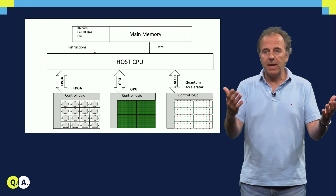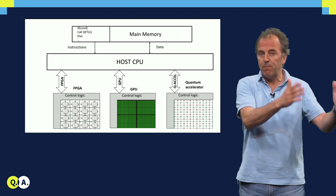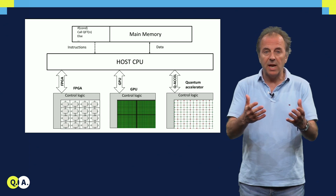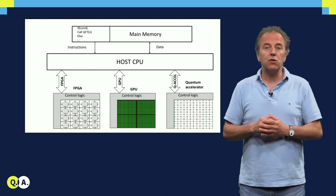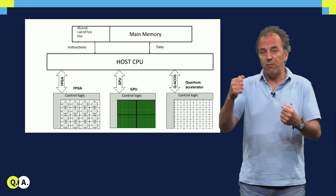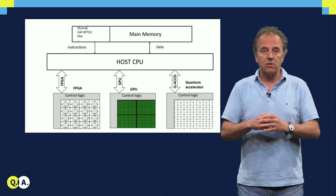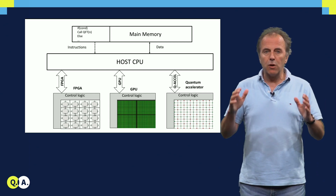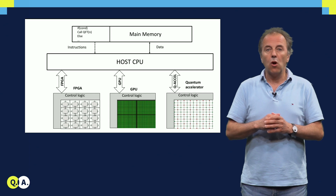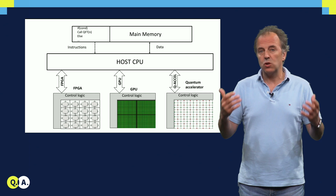When you write any application, you will most likely end up using different kinds of accelerators including the FPGA, the GPU, and also the quantum accelerator. Therefore, your application has to be compiled for four different instruction sets: your Intel processor on the classical machine, your FPGA instruction set, the GPU instruction set, and also the quantum instruction set. Whatever we discuss in the following talks will focus on the quantum accelerator device and the application processes needed both classically and quantumly.